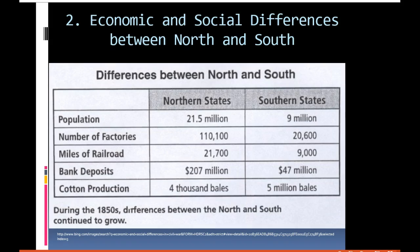Why is having more railroads important? When the Civil War happened, the Union was able to move troops and supplies much faster because of all the miles of railroad they had — that made a huge difference. Bank deposits, just the amount of money people had, were more than four times as much for the North. The only advantage the South had was their cotton production.